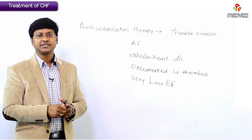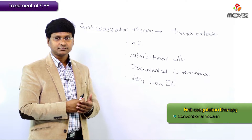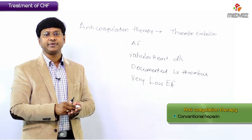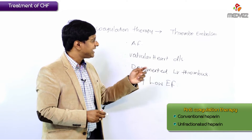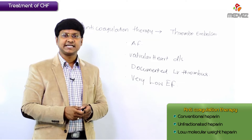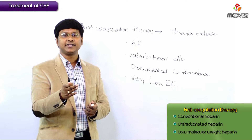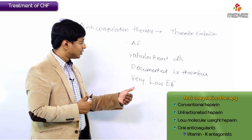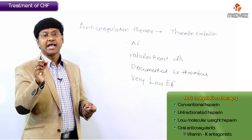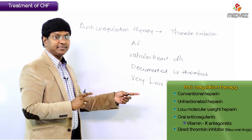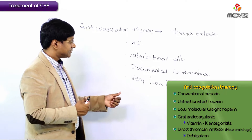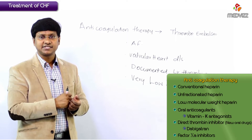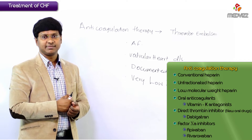Anti-coagulation therapy includes conventional unfractionated heparin, or low molecular weight heparins to reduce side effects. At discharge, parenteral anti-coagulants are converted to oral anti-coagulants, which include vitamin K antagonists, and the newer oral anti-coagulants such as the direct thrombin inhibitor dabigatran, and factor Xa inhibitors including apixaban and rivaroxaban.